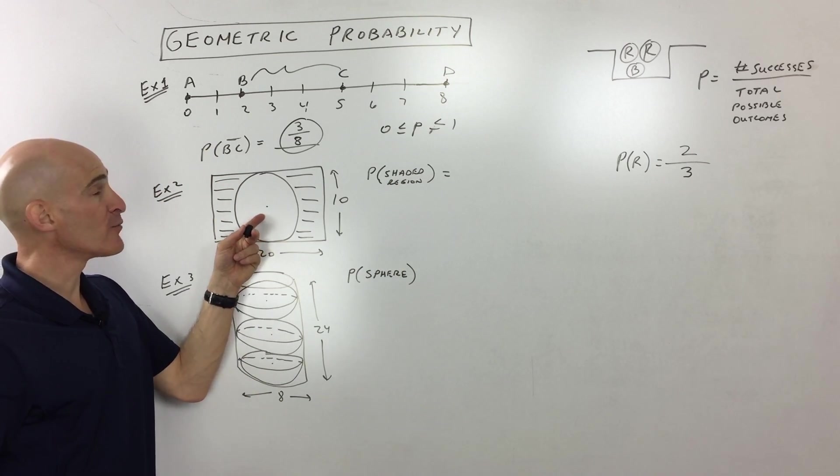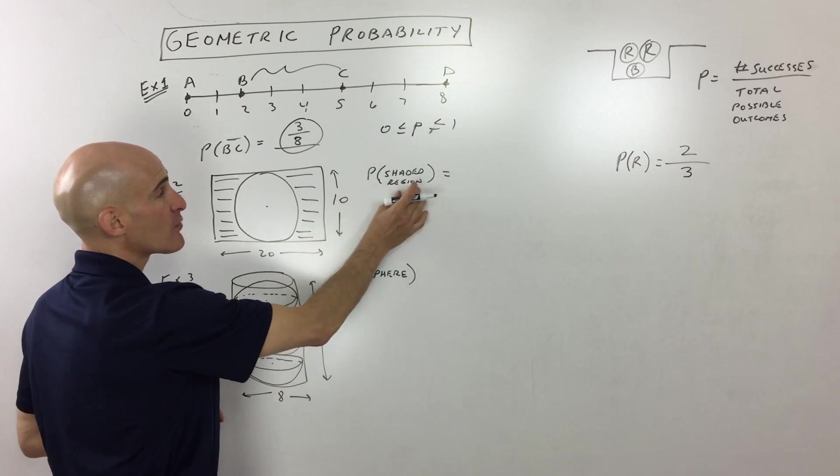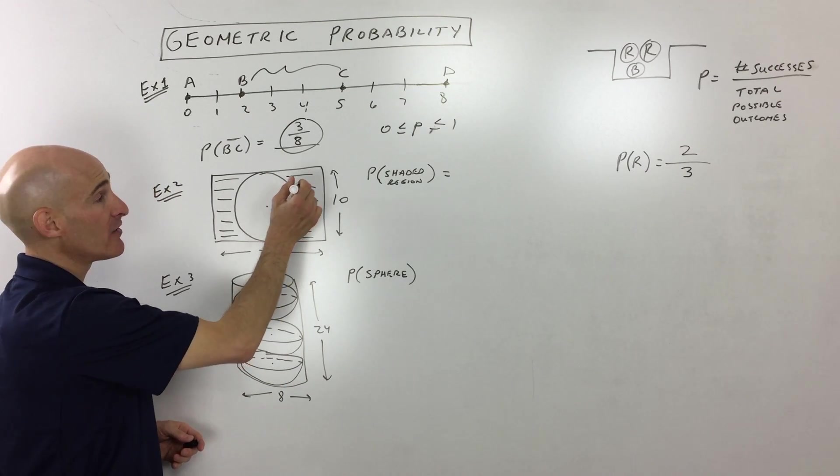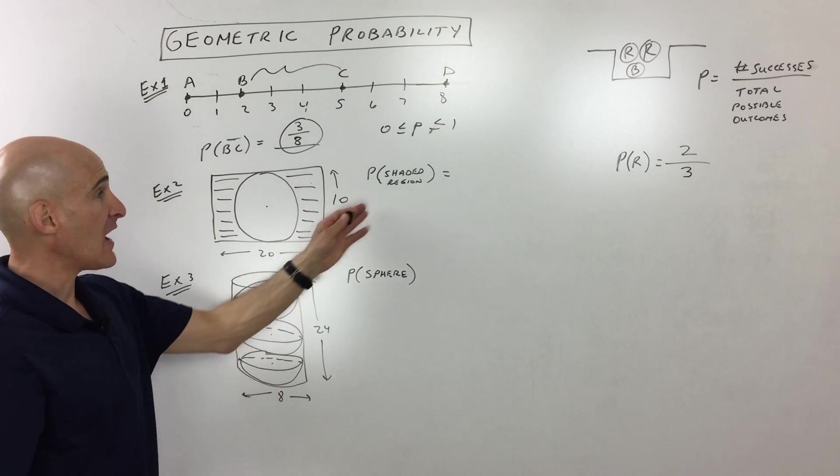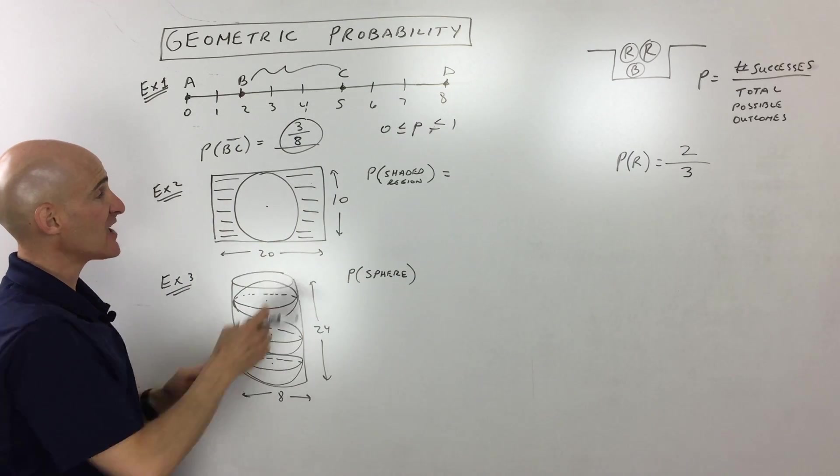Now example two, now we're moving from one dimension to two dimensions. We're talking about area. And it's asking us, what's the probability that you pick a point at random inside of this rectangle that it lies in this shaded region, outside of the circle?